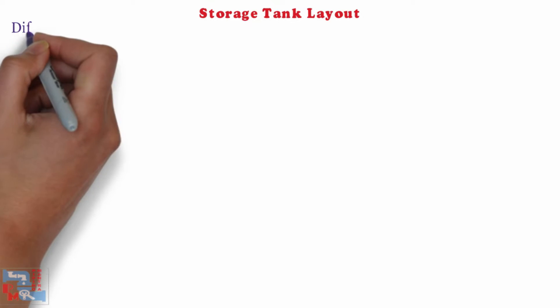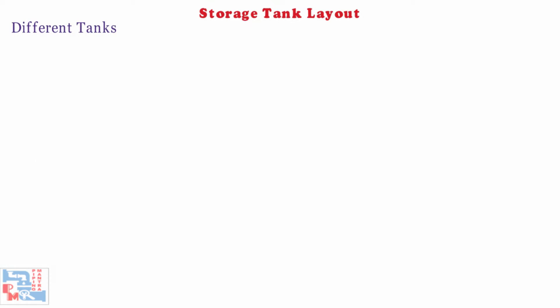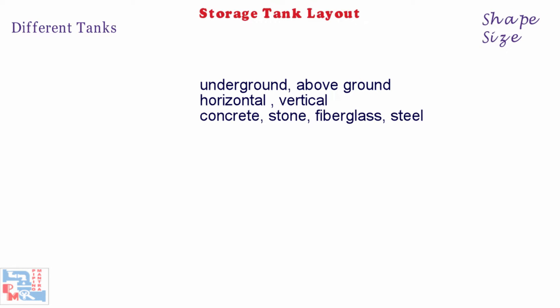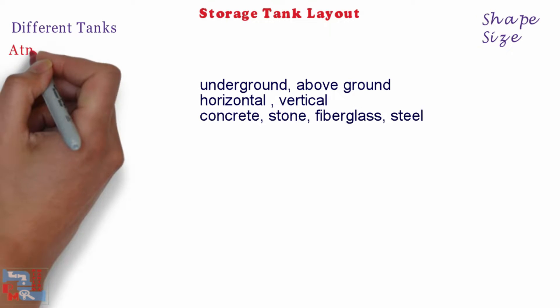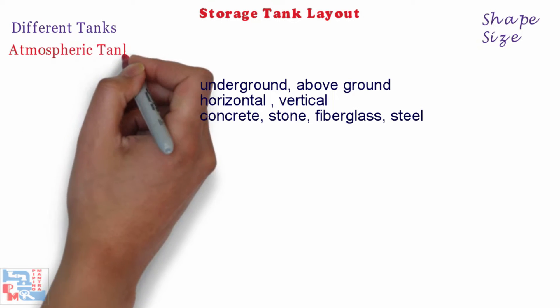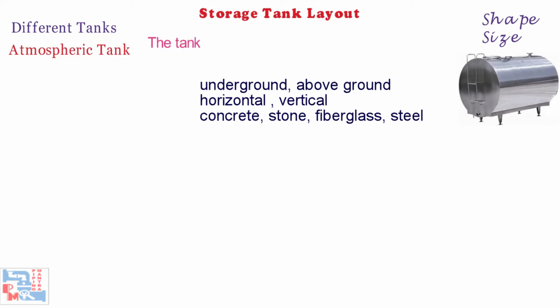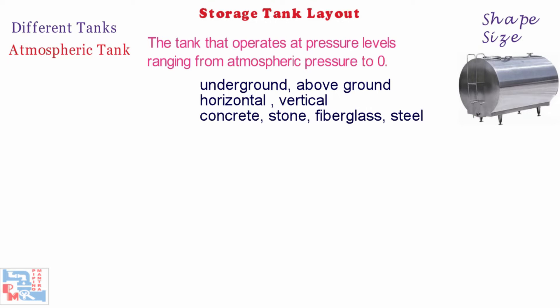Let's discuss about different types of storage tanks. These storage tanks come in different sizes and shapes. They can be underground, above ground, horizontal, or vertical, and are made of concrete, stone, fiberglass, or steel. First is the Atmospheric Tank — the tank that operates at pressure levels ranging from atmospheric pressure to 0.5 psig.